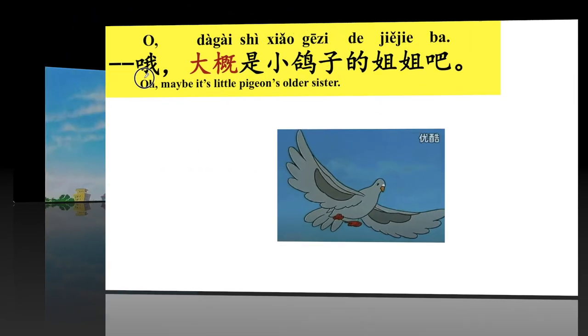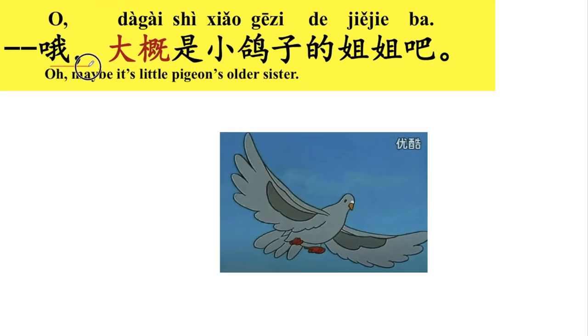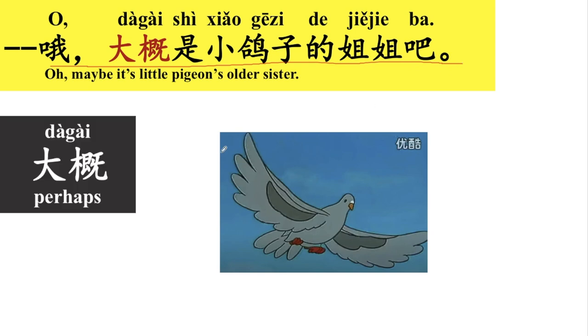那不是小鸽子，是大鸽子。小 means small, 大就是big. 好，那不是小鸽子，是大鸽子。大概是小鸽子的姐姐吧。好，那我们来看一下，大概。